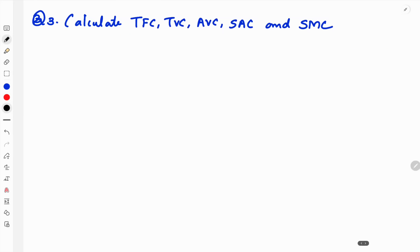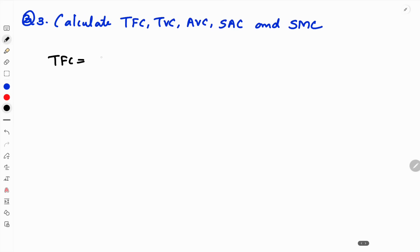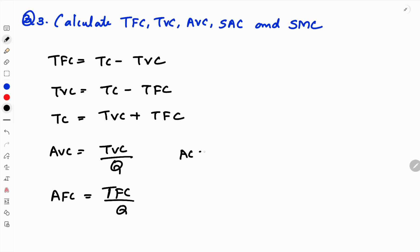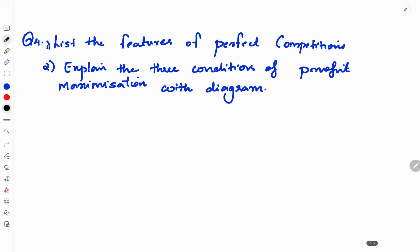In the third question, calculate TFC, TVC, AVC, SAC, and SMC. TFC equation is TC minus TVC. TVC is TC minus TFC. TC is TVC plus TFC. AVC is TVC by Q, AC is TC by Q, AFC is TFC by Q. SMC means change in TC or change in TVC by change in Q.